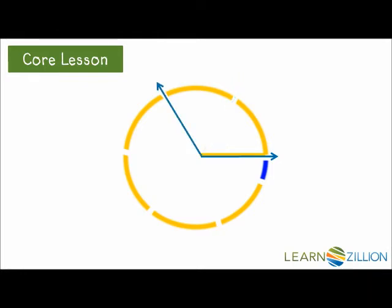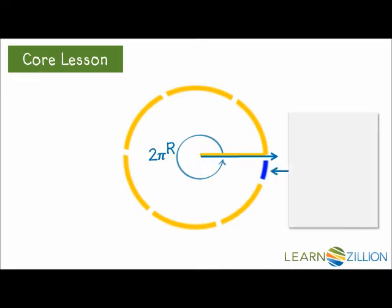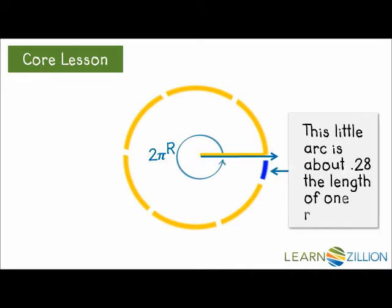The central angle subtended by an arc the same length as 2 radii is called 2 radians. 3 radians is almost halfway around the circle. Here's 4 radians and 5 radians. The central angle subtended by 6 radii is called 6 radians. Now we've almost gone all the way around the circle. It takes 2 pi or about 6.28 radii to go all the way around the circle. So this little arc is about 0.28 the length of one radius.